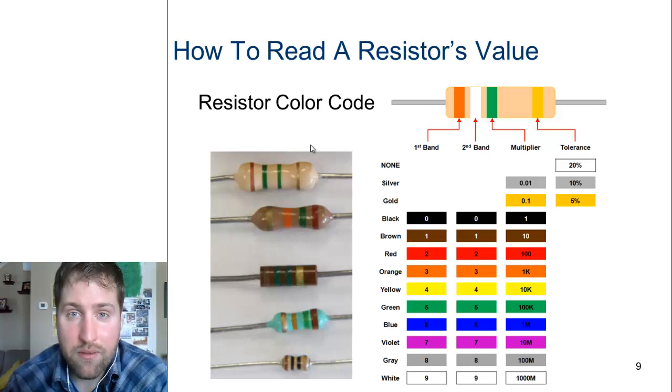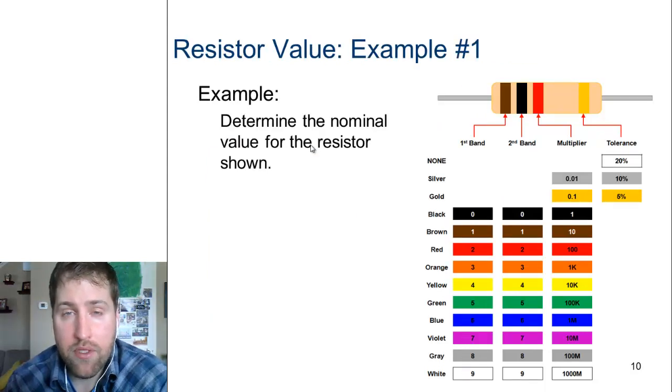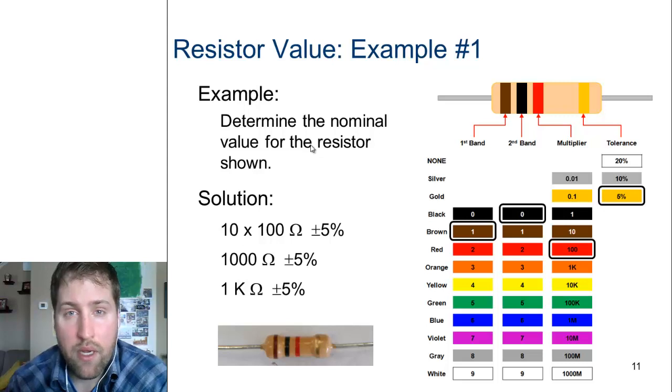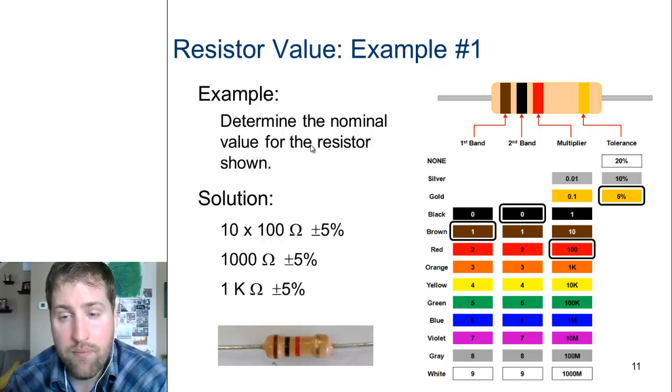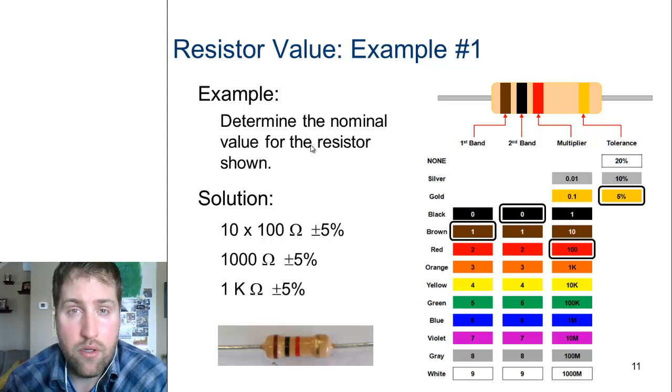So let's use it with a couple examples. Here you can see on the top the resistor we're looking at - the first band is brown, second band is black, third band is red, on the very far right that fourth band is gold. The way we use this color coding system is that the first band corresponds to brown which is 1, second band corresponds to black which is 0. We take those two numbers to form the number 10, 1 and 0, and then we multiply 10 times a multiplier that is red, so in this case would be 10 times 100.